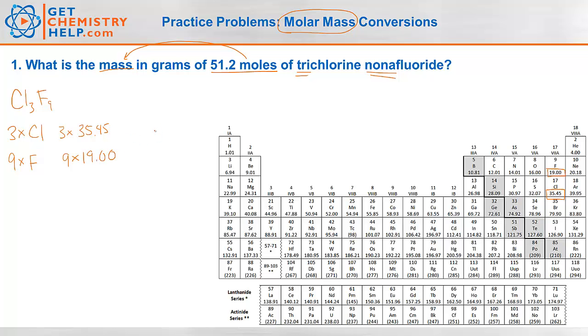So I worked that out. So three chlorines is a total of 106.35. Nine fluorines is a total of 171.00. And just a quick little reminder on significant digits. When we're doing molar masses, however many decimals the original mass had, we just give that number to the total. So chlorine had two decimals. So when we add up all the chlorines, we'll give it two decimals. Fluorine had two decimals. So we add up all the fluorines, we'll give it two decimals.